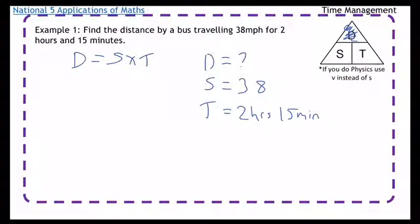Now this is the thing that a lot of people will do without even thinking about it, is they write 2.15. Okay, but that's not right, because 15 minutes is not like 15 over 100 of an hour. You have to change it into decimal properly.